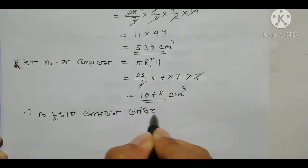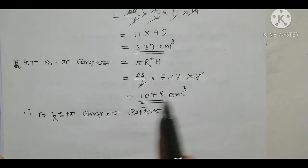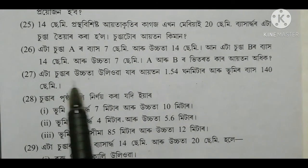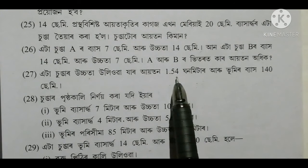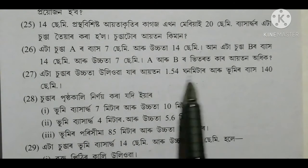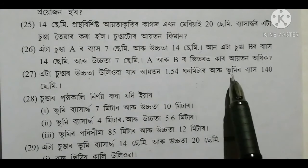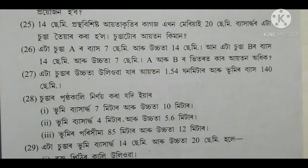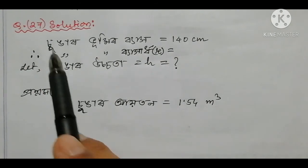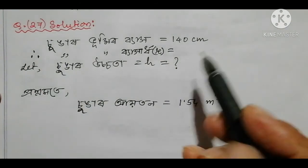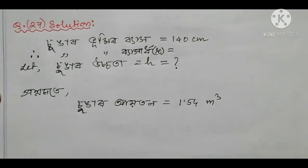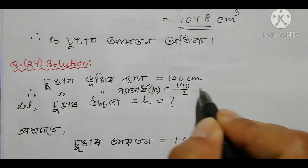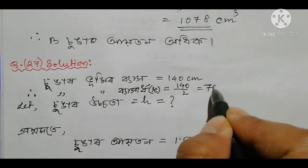How much more — comparing 1078 and 513. Now moving to question number 27. The volume of the cylinder is 1.54 cubic meters. Breadth divided by 2: 140 divided by 2 gives 70 centimeters.